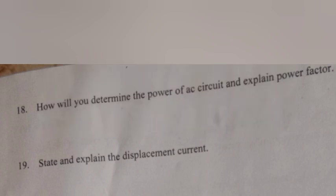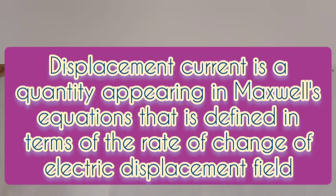Question 19. State and explain the displacement current. Answer: Displacement current is a quantity appearing in Maxwell's equation that is defined in terms of the rate of change of electric displacement field.